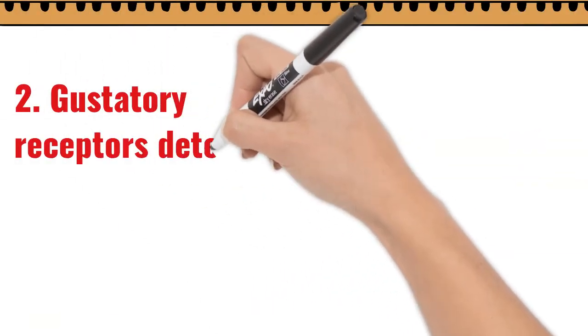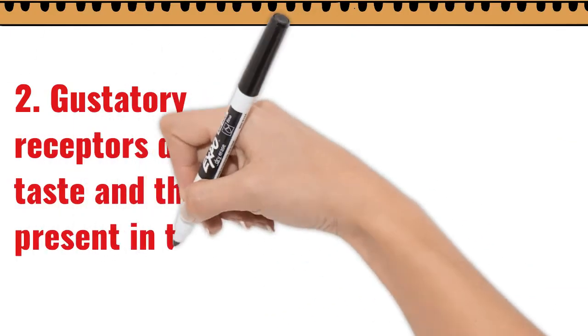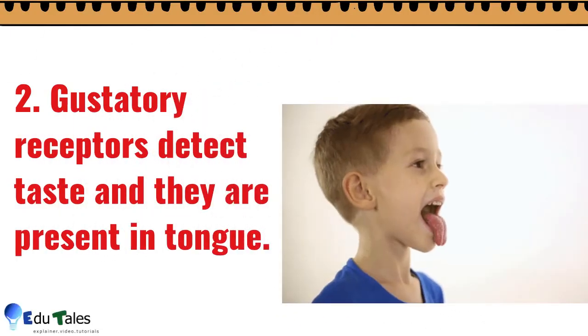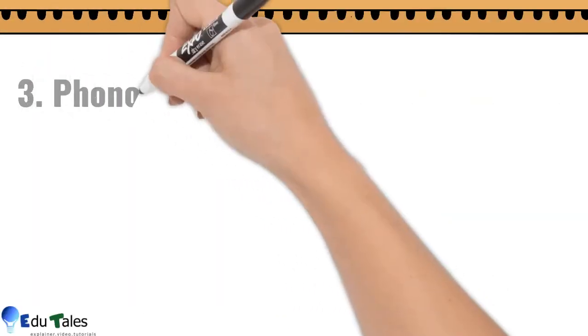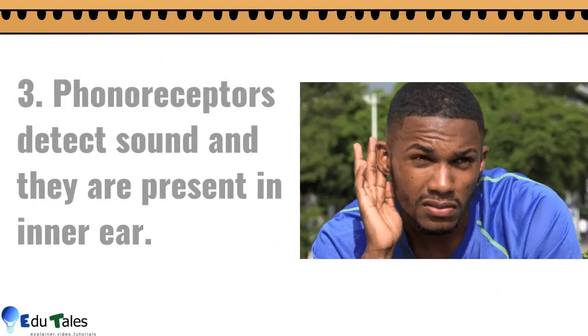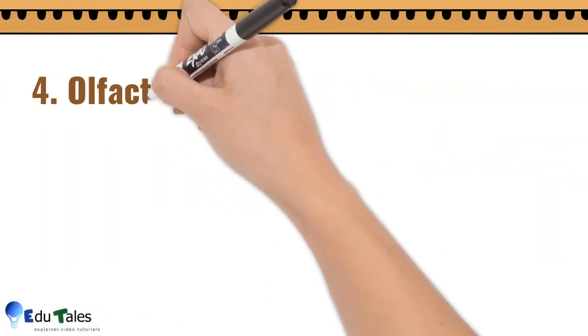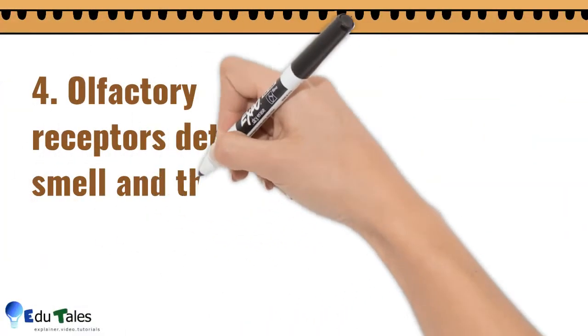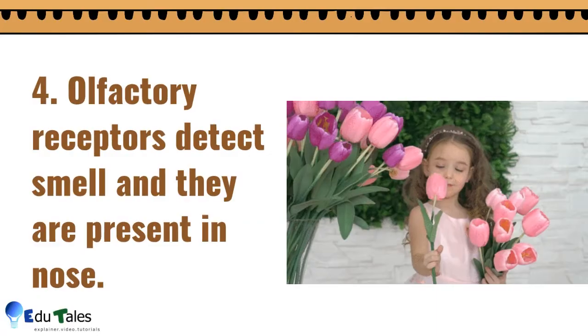Phono receptors detect sound and they are present in inner ear. Olfactory receptors detect smell and they are present in nose. Thermoreceptors detect heat or cold and they are present in skin.